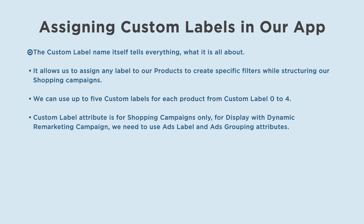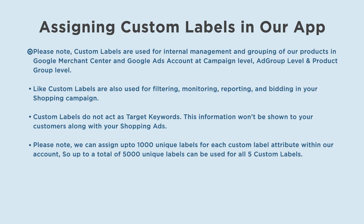The custom label name itself tells everything about what it is. It allows us to assign any label to our products to create specific filters while structuring our shopping campaigns. We can use up to five custom labels for each product, from custom label zero to four. The custom label attribute is for shopping campaigns only. For display with dynamic remarketing campaigns, we need to use ads label and ads grouping attributes. Custom labels are used for internal management and grouping of our products in Google Merchant Center and Google Ads account at campaign level, ad group level, and product group level.